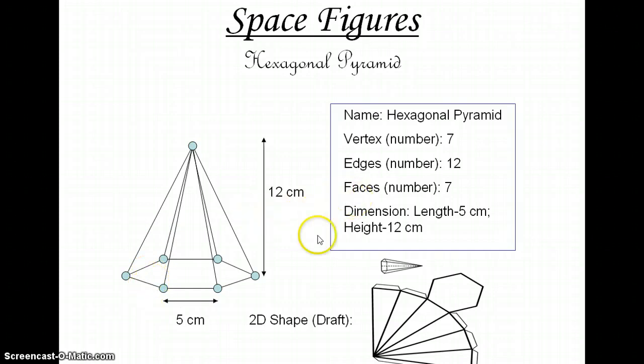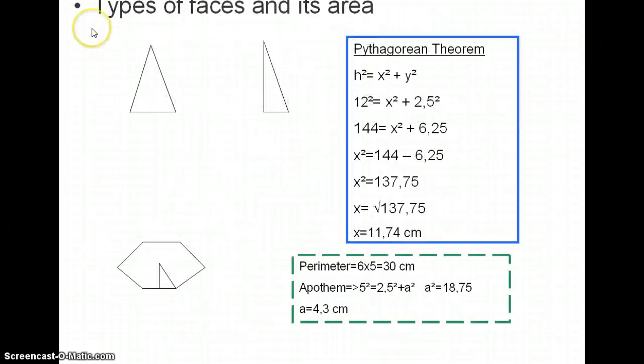It has seven faces. We can see them better in the 2D shape, also called draft. We have one, two, three, four, five, six, and the base seven. Its dimensions are five centimeters long and twelve centimeters high.